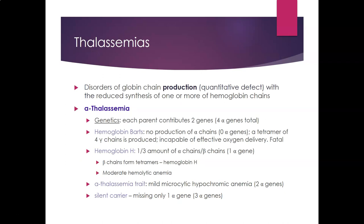The thalassemias are disorders of globin chain production—a quantitative defect. Whereas hemoglobin S and hemoglobin C are qualitative defects (you produce enough but they are defective), in thalassemia you do not produce enough of one or more hemoglobin chains. For alpha thalassemia, the genetics are such that each parent contributes two alpha genes, giving a total of four alpha genes for alpha globin chain production.